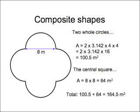I got, for the two whole circles, I got 2 times 3.142 times 4 times 4, which gave me just over 100 square meters. The central square, of course, is 64 square meters, so adding those together gave me 164.5 square meters.